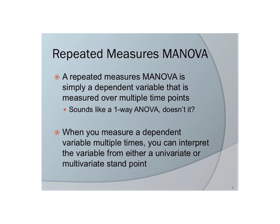In this video, I'm going to discuss the final statistic of the semester, which is a repeated measures MANOVA. A basic repeated measures MANOVA is simply a dependent variable that is measured over multiple time points — that could be multiple trials, multiple times, like 5, 10, 15, 20 minutes. Essentially, it's the same organization as a one-way repeated measures ANOVA.